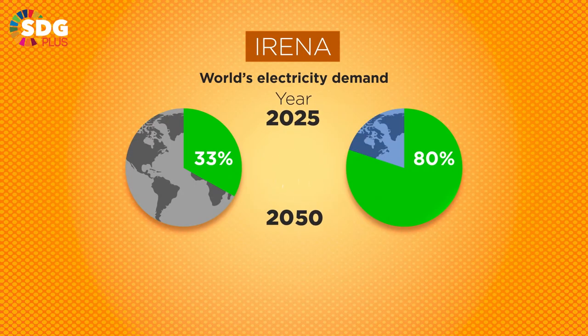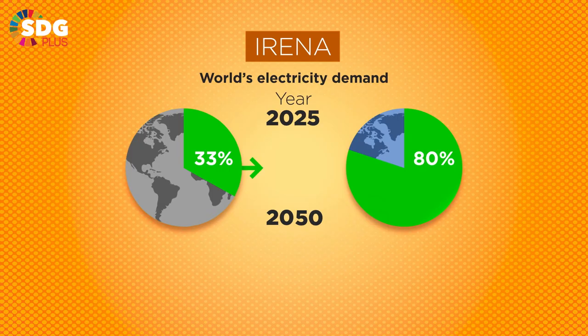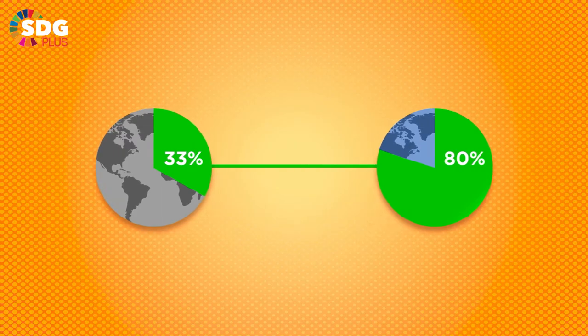That means between 2025 and 2050, renewables' share of global electricity generation would need to almost triple. The only way to bridge this gap is to boost innovation in renewable energy technology.